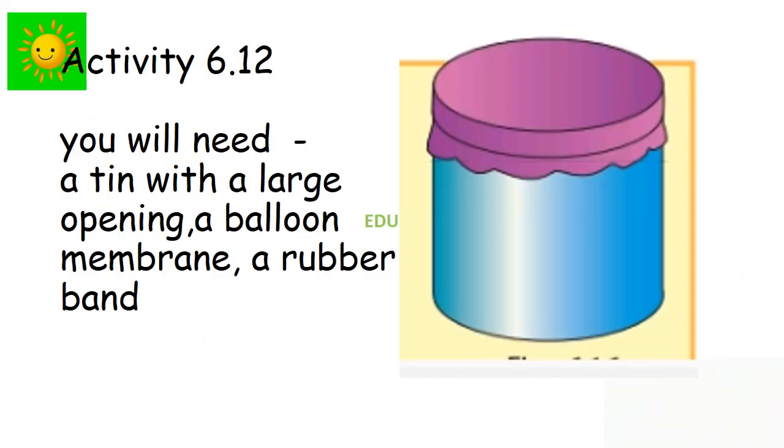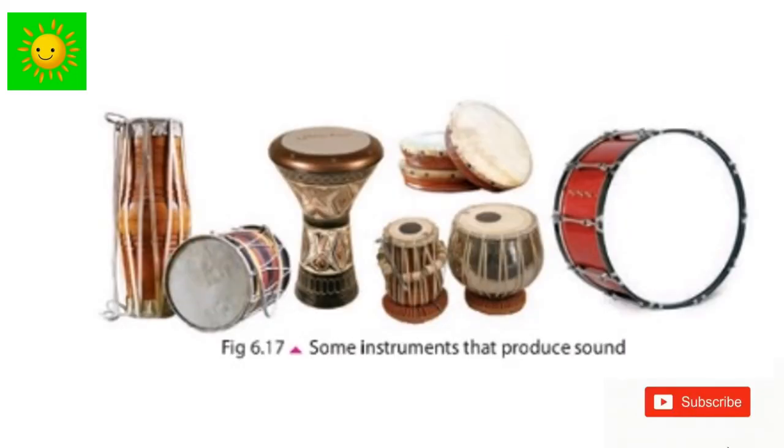Next activity, we need a tin with a large opening, a balloon membrane and a rubber band. Keep the balloon membrane stretched on the opening of the tin and make a drum. Beat it rhythmically. You can hear the sound. Now you can see some instruments that are played the same way as the drum which we produced in earlier activities.